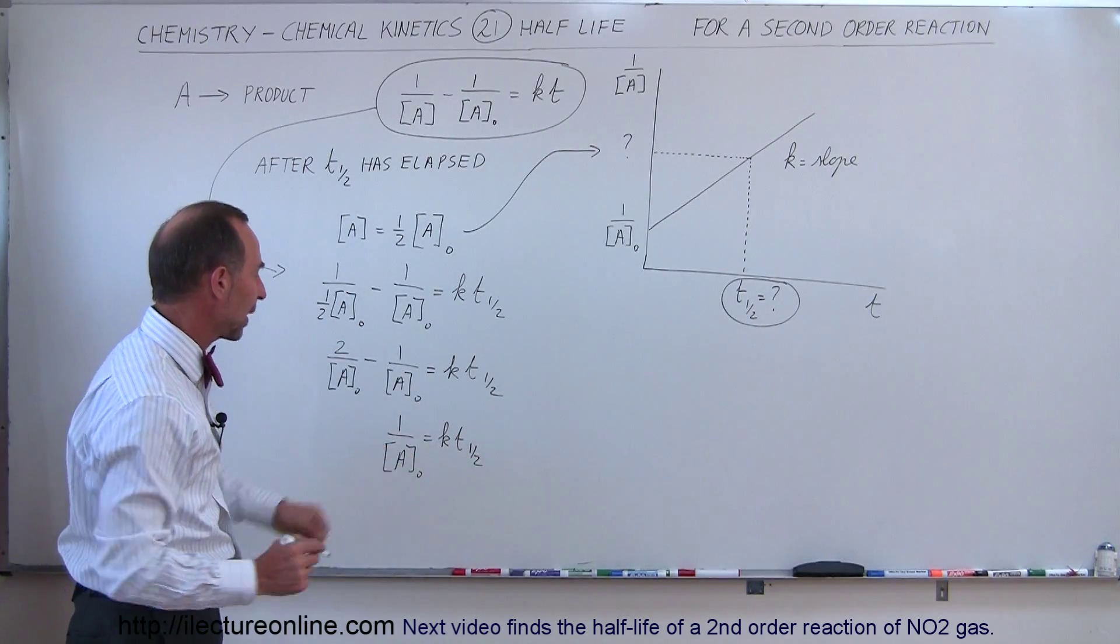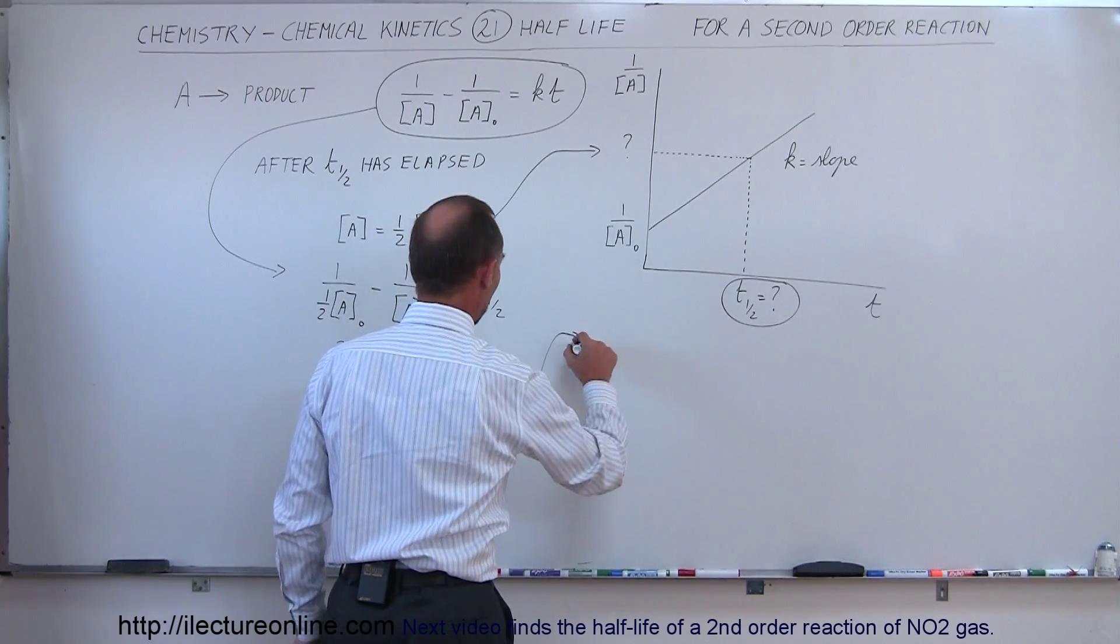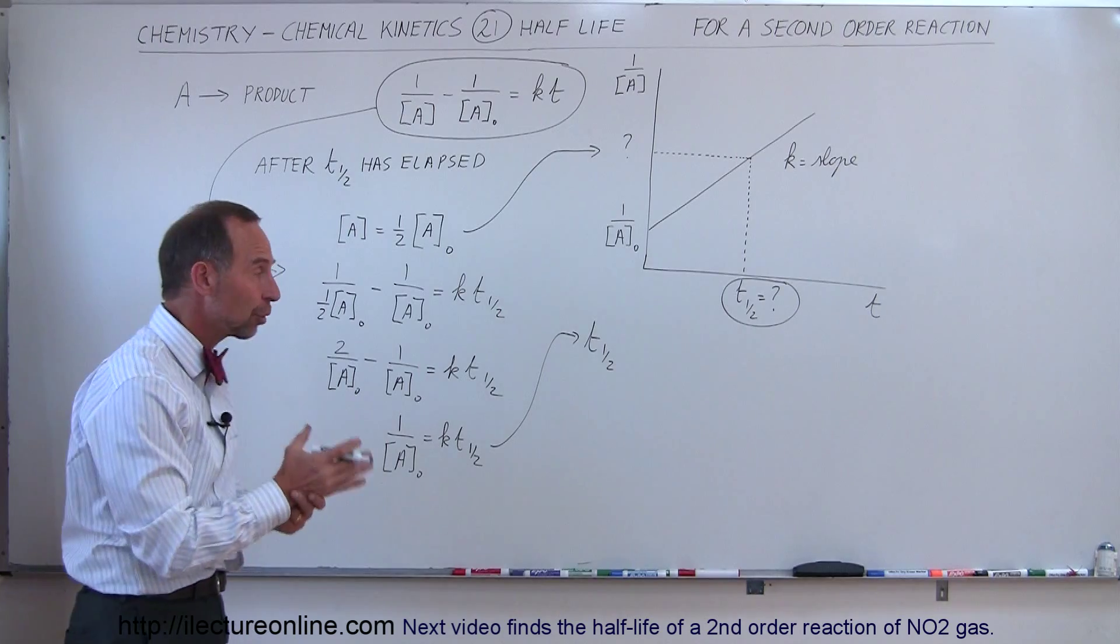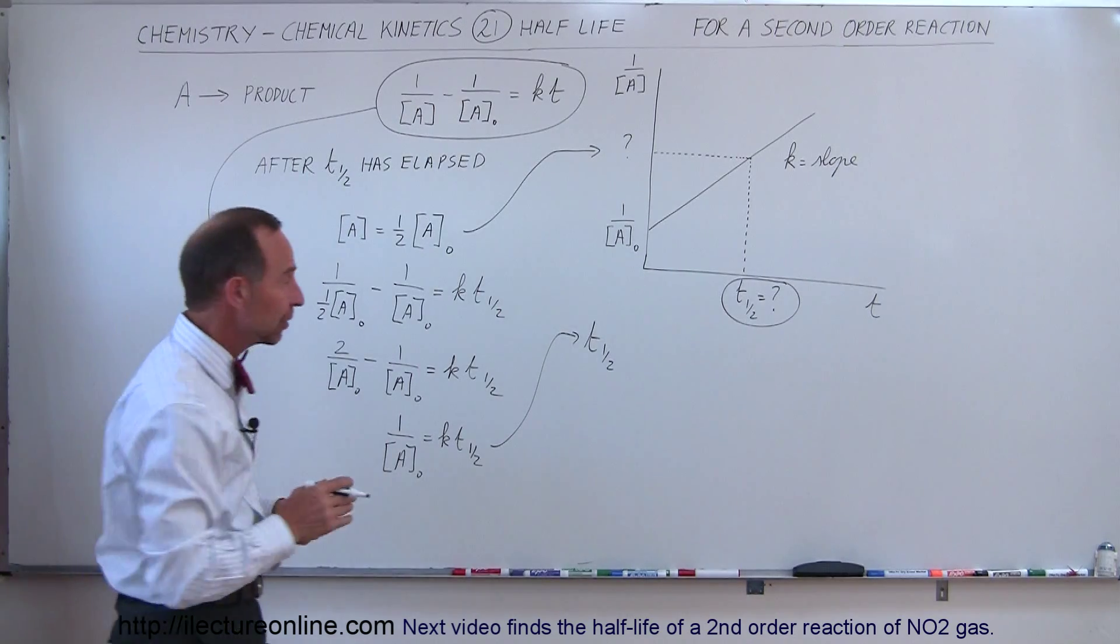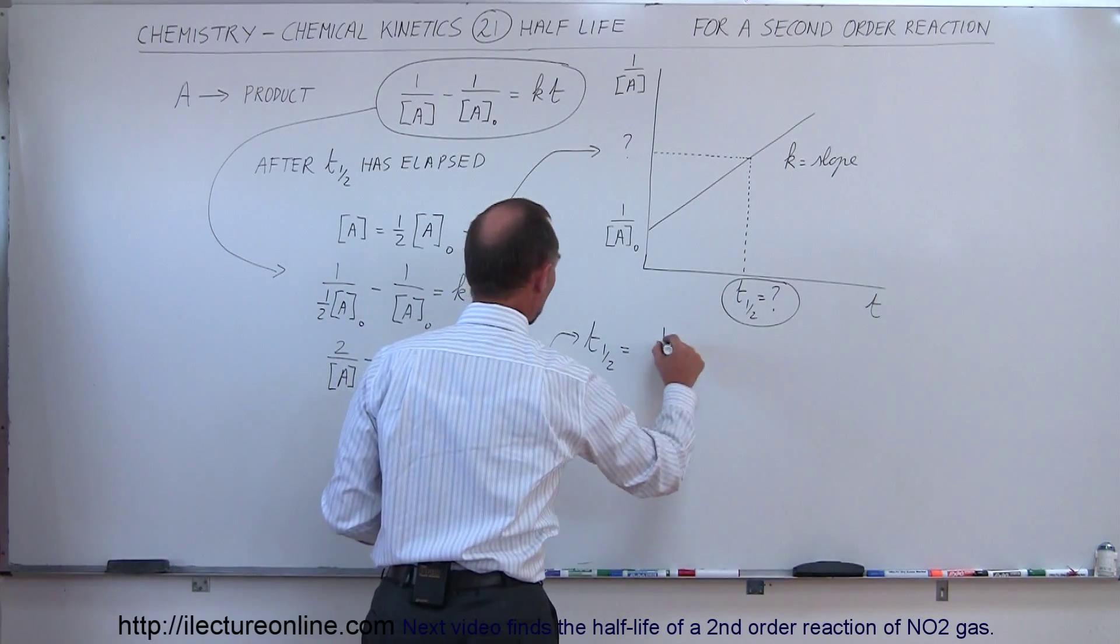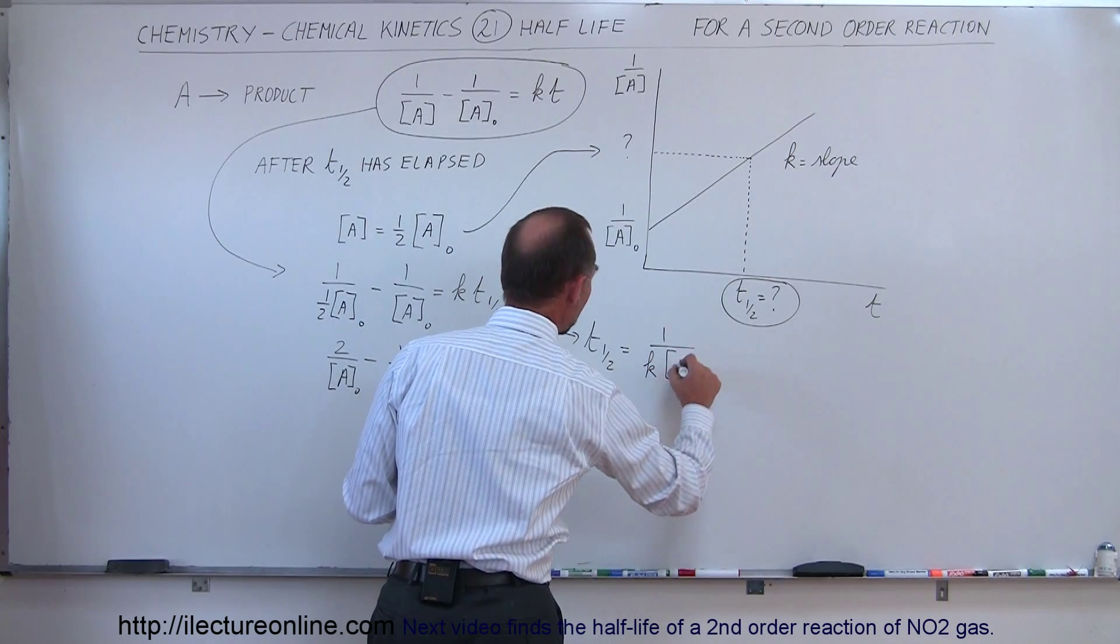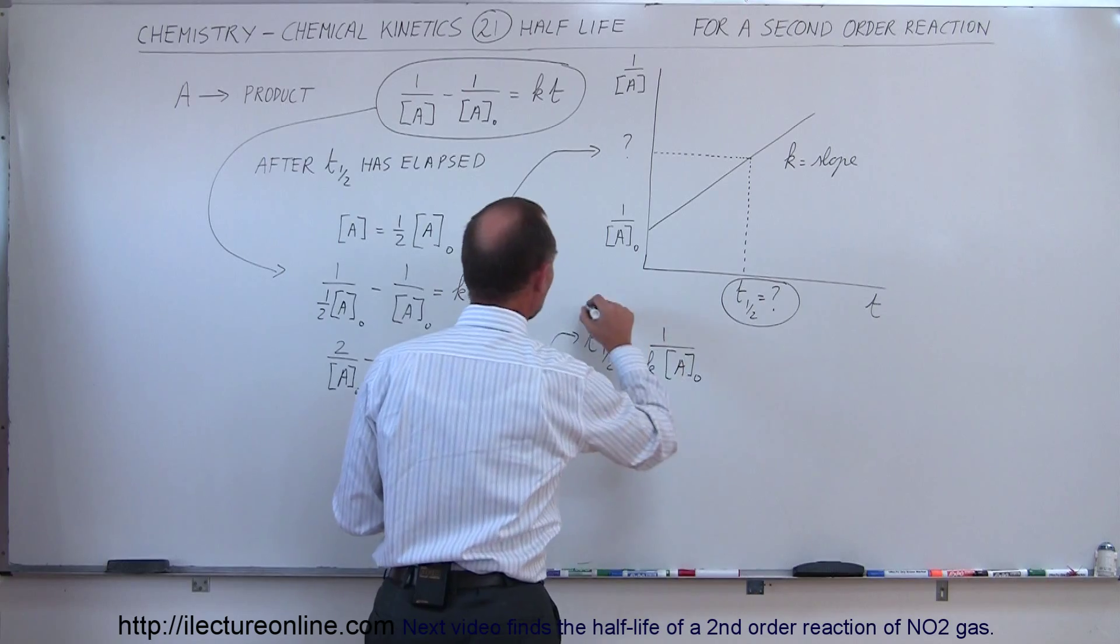And so now when we divide both sides by K, we get the following results. So now we say the half-life, the time that it takes to go to half the original concentration of the reactants, is equal to 1 over the reaction constant K times the original concentration of A.